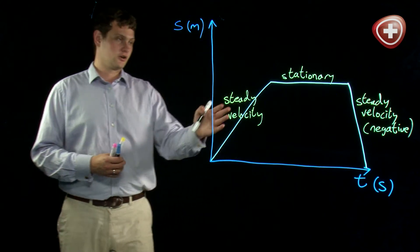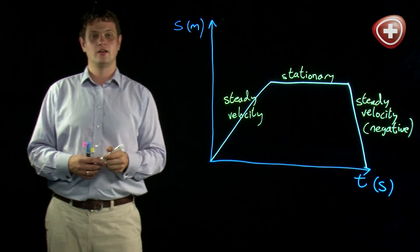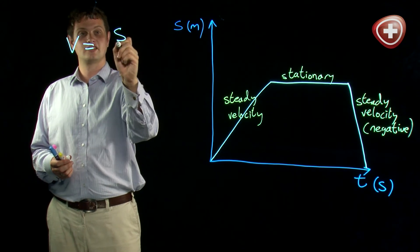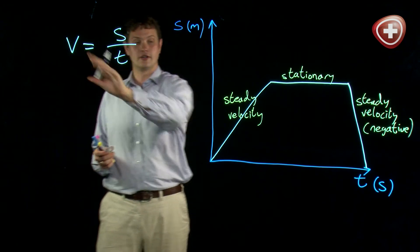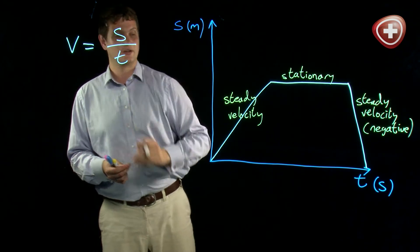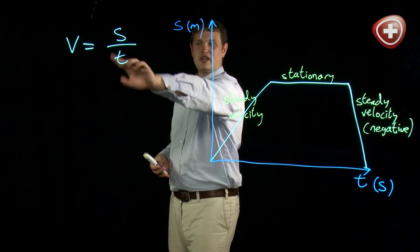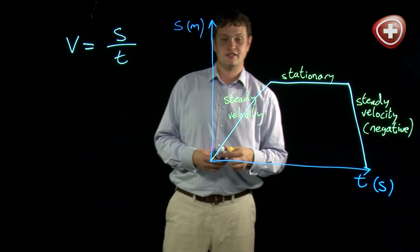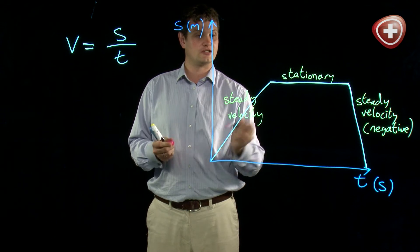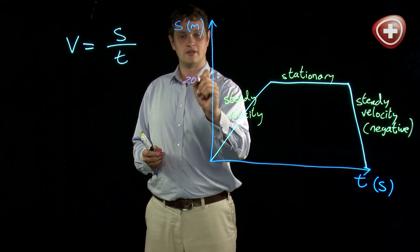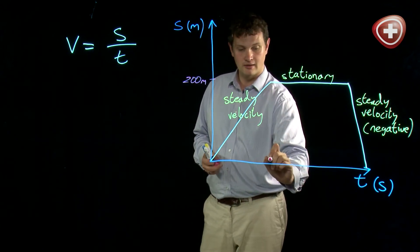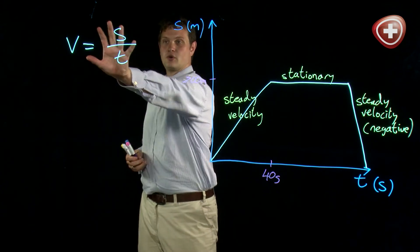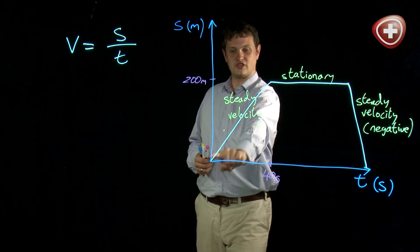Now let's think about our graph for a minute. We can remember from our equations that velocity is equal to displacement divided by time, and this gives us our average velocity — the total displacement divided by the total amount of time. We can use this equation to work out our velocities at these points. Let's say it's 200 meters to the shop, so my displacement here is 200 meters, and that's taken me 40 seconds. We can use this equation and this graph to work out what my velocity is in this section.